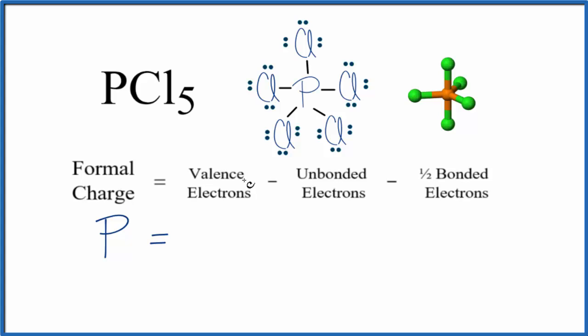We have phosphorus, which is in group 15 on the periodic table, also called 5A, so it has five valence electrons. For unbonded electrons, all of the electrons around phosphorus are involved in chemical bonds. This line means there are two electrons shared between the phosphorus and the chlorine, so we don't have any unbonded electrons.